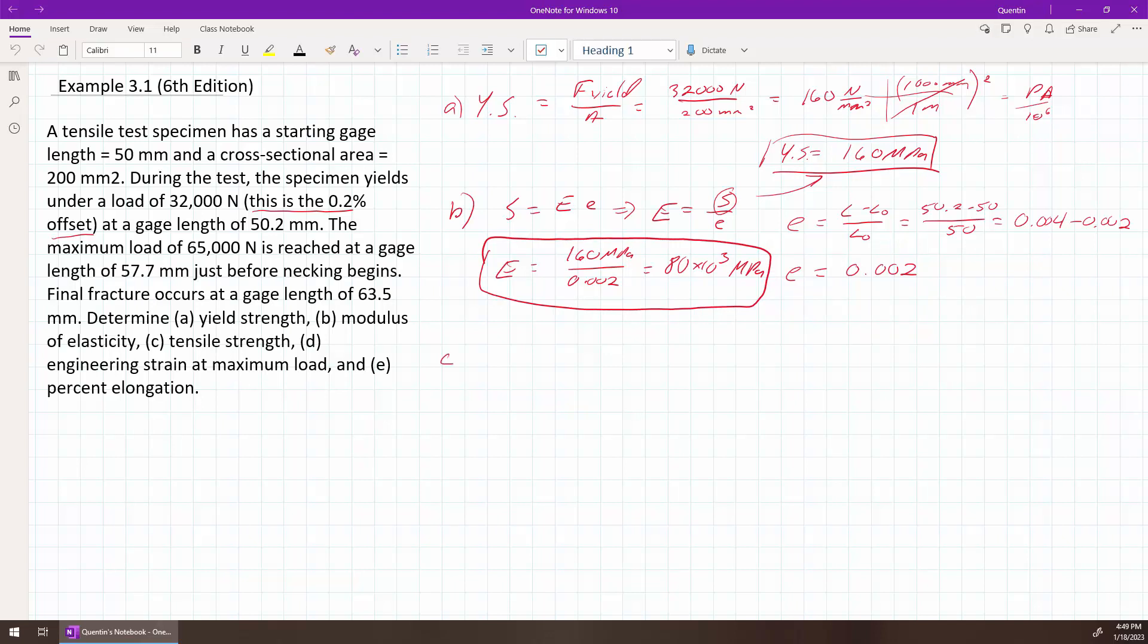Okay, part C. Now we need to calculate the tensile strength. Well, the tensile strength is simply the maximum force over the area. So what is the maximum force? It's 65,000. So 65,000 newtons over the 200 millimeters squared. And that works out to be 325 newtons per millimeter squared, which is a megapascal. So there we go, that is our tensile strength.